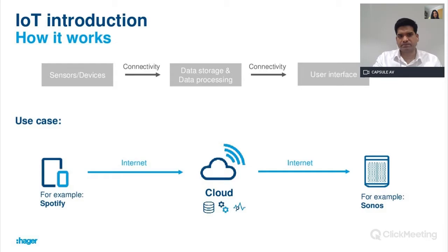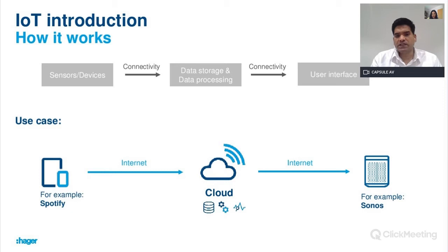Let's see a simple example of how IoT works. You can play a song from a smartphone on a Spotify app and listen to it on a Sonos speaker, which is another IoT device. However, if you scale up to thousands of sensors communicating directly with the cloud, it creates huge traffic and needs more storage and higher bandwidth transmission.